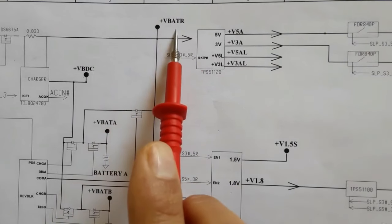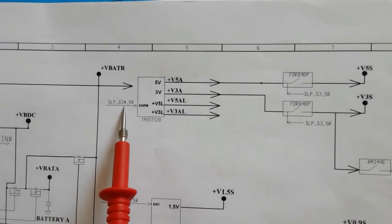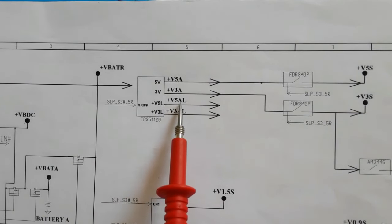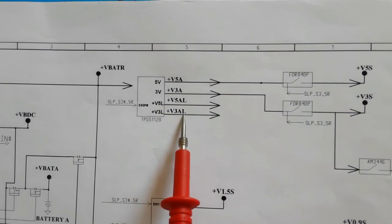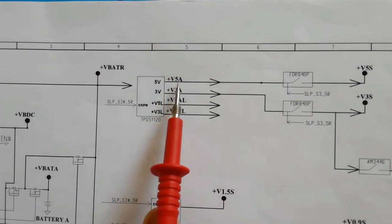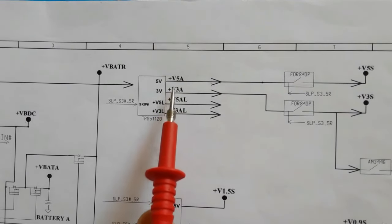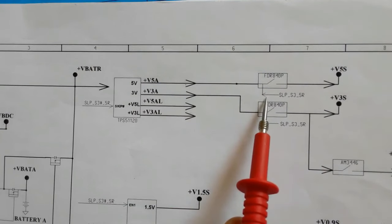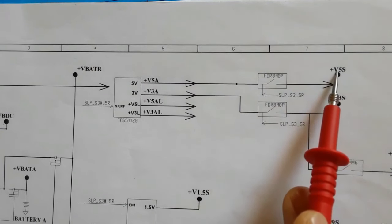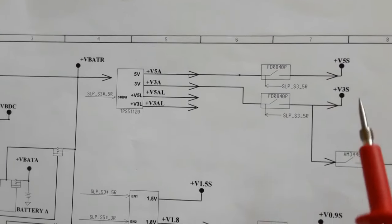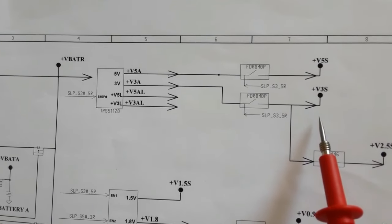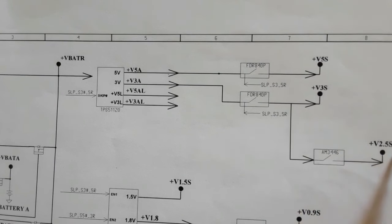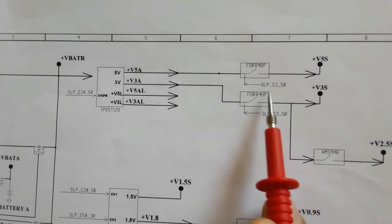VBAT is the main power for every motherboard. After receiving VBAT and an enable signal, the TPS51120 IC will generate the 3-volt and 5-volt power rails — 3-volt always and 5-volt always. These two voltages are applied to two MOSFETs or switches to get plus 5 volt and plus 3 volt. The 3 volt is then applied to another circuit — the AM3446 — and we get 2.5 volt.